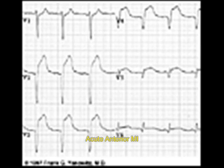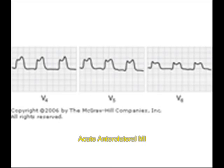Similarly, you can see here acute anterior MI. It is characterized by ST segment elevation, especially in V2 and V3. This is acute anterior MI. And if you see ST elevation in lateral leads like V4, V5, V6, it is acute anterolateral infarction. So in acute anterolateral infarction, you will see ST segment elevation in lateral leads V4, V5, V6.